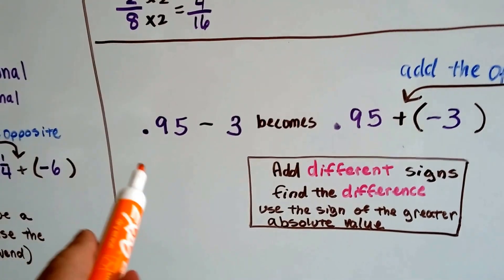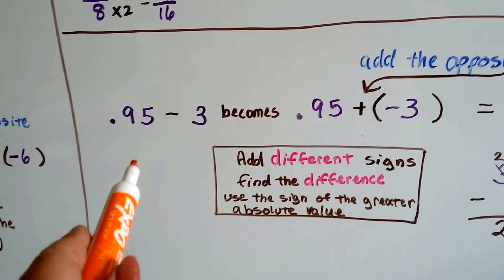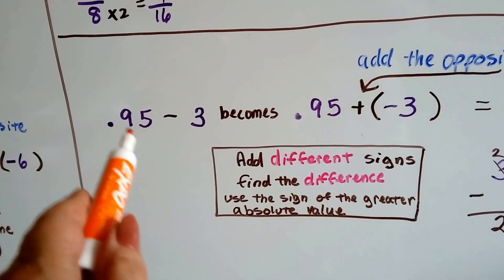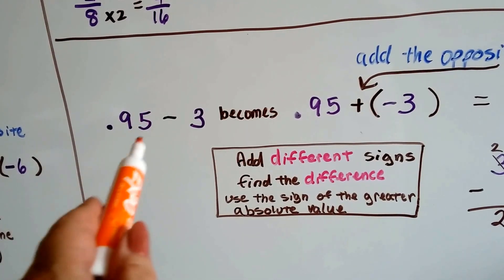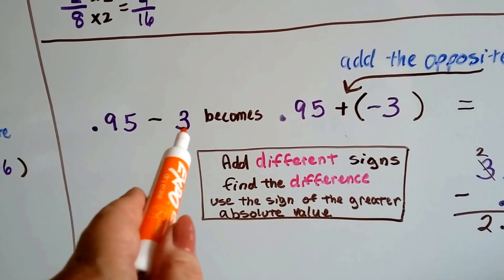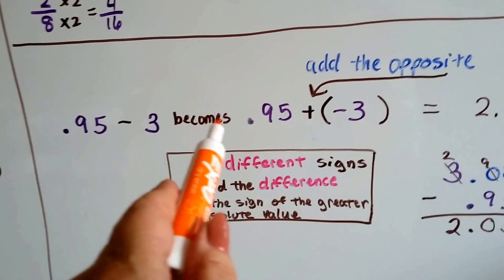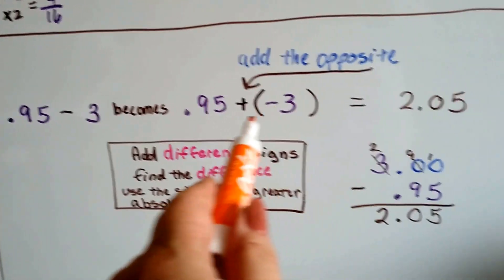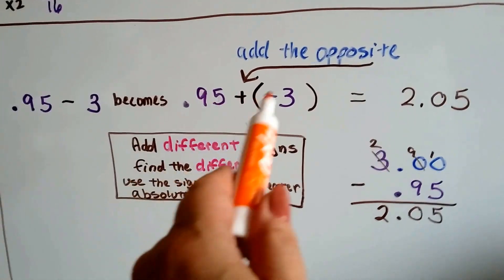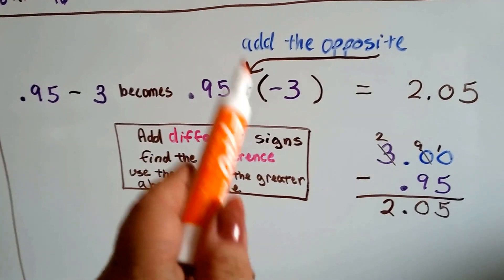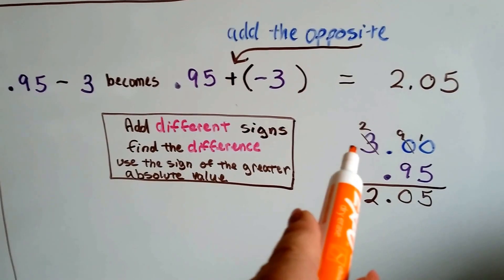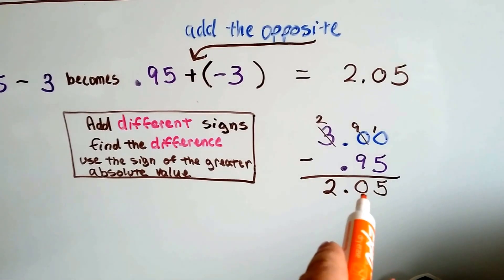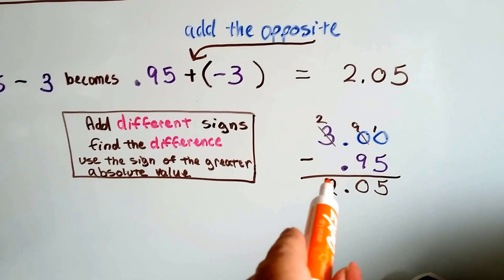Now we have .95 minus 3. We have rational numbers written in decimal form. The .95 minus 3, well, this is .95. It's 95 one-hundredths. It's smaller than 1. And we're trying to subtract 3 big whole numbers. So it's going to become .95 plus negative 3 because we're going to add the opposite. Now because the signs are different, this is a negative and that's a positive, we're going to find the difference. So we have to add a decimal point and two zeros to the 3 so that we can subtract the .95. We do our subtraction and get 2.05.